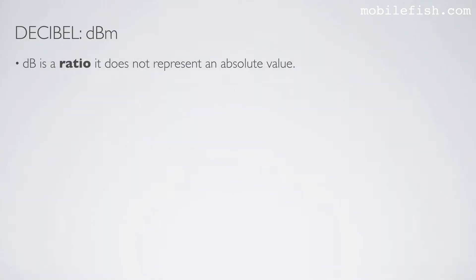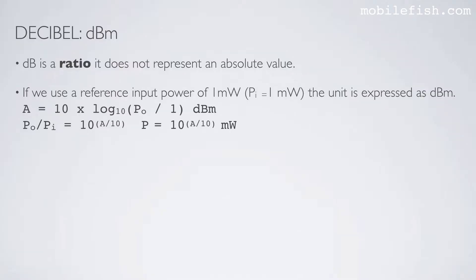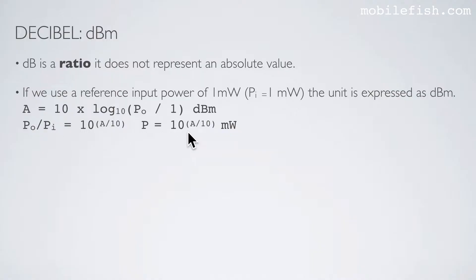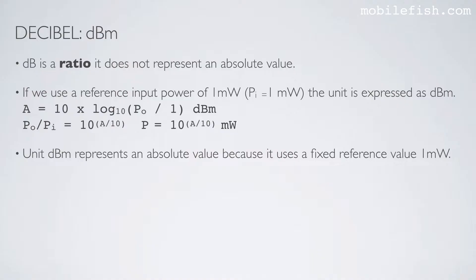dB is a ratio — it does not represent an absolute value. If we use a reference input power of 1 milliwatt, the unit is expressed as dBm. Here are two equations: one to calculate the decibel value where the input power is 1 milliwatt, and one to convert a decibel value into a power. The unit dBm represents an absolute value because it uses a fixed reference of 1 milliwatt. The unit dB is a ratio; the unit dBm is an absolute value.